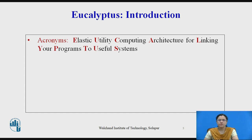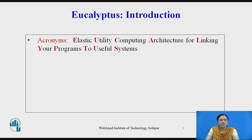First we will see the introduction of Eucalyptus. Eucalyptus is a paid and open source computer software for building Amazon Web Services (AWS) compatible private as well as hybrid cloud computing environments, originally developed by the company Eucalyptus Systems. Eucalyptus enables pooling of compute, storage, and network resources that can be dynamically scaled up or down as application workloads change. The acronym for Eucalyptus is: Elastic Utility Computing Architecture for Linking Your Programs To Useful Systems.